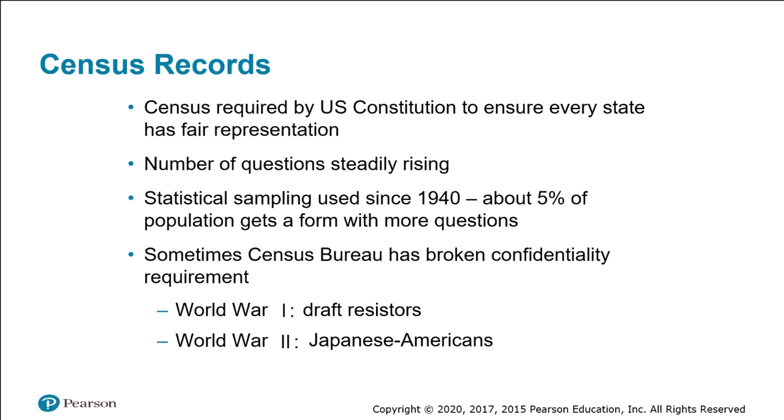Let's start with census records. In order to ensure that each state has fair representation in the House of Representatives, the U.S. Constitution requires the government to perform a census every 10 years. The first census of 1790 only had six questions — it asked for the name of the head of the household and the number of persons in categories including free white males at least 16 years old, free white males under 16, free white females, all other free persons by sex and color, and enslaved people.